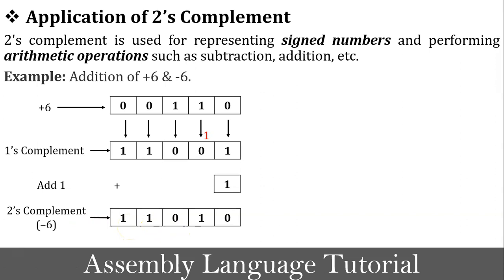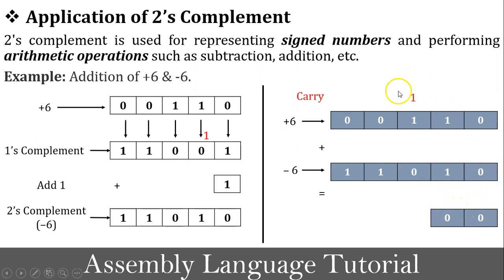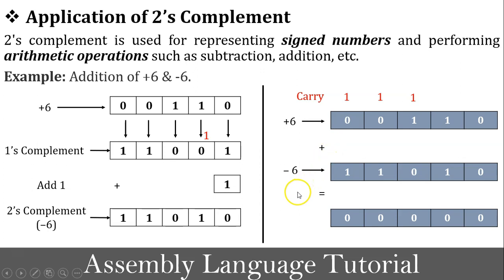Now we perform the addition of +6 (00110) and −6 (11010). Adding bit by bit: 0+0=0; 1+1=0 with carry; 1+1=0 with carry; 1+1=0 with carry; 1+1=0, ignoring the final carry. The result is 00000, which equals 0. This confirms that +6 plus −6 equals 0 using 2's complement arithmetic.